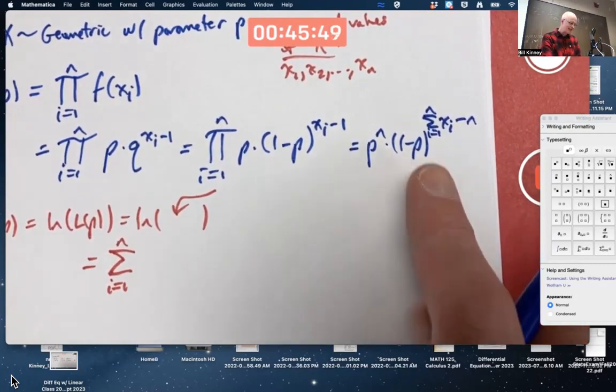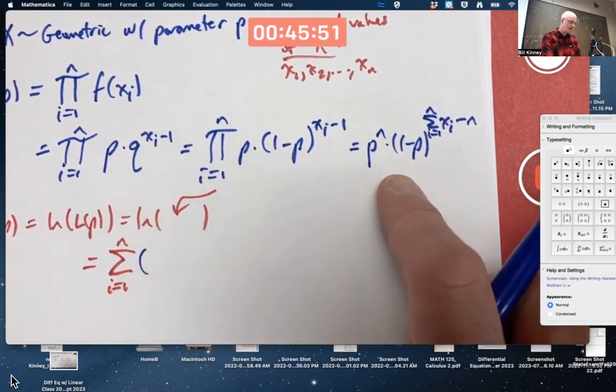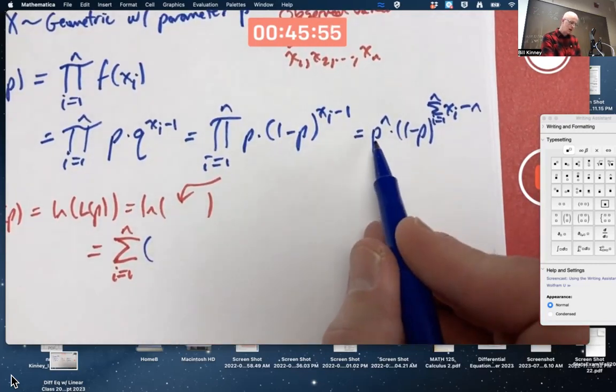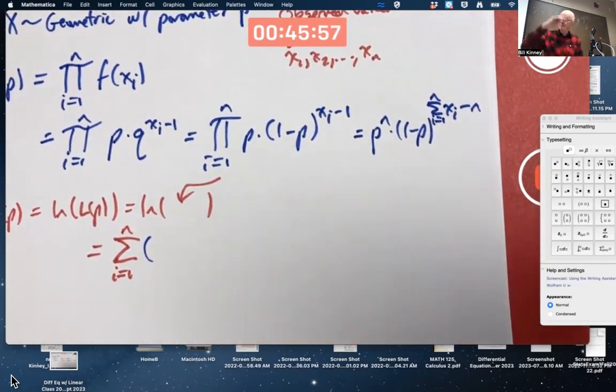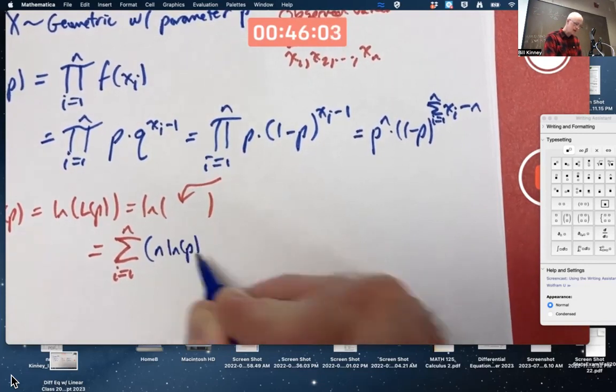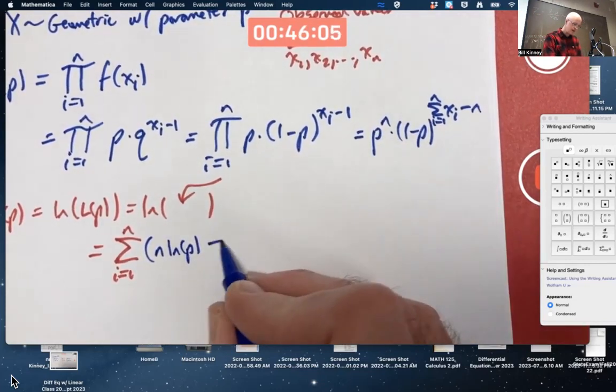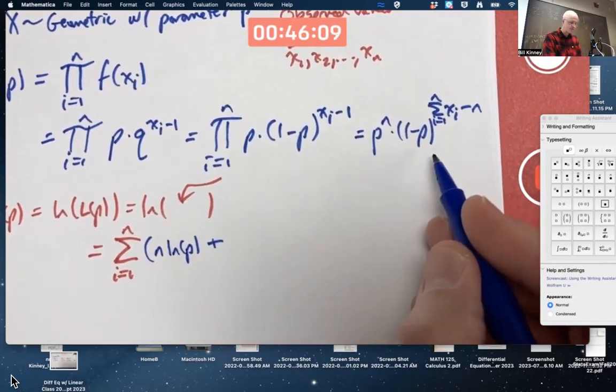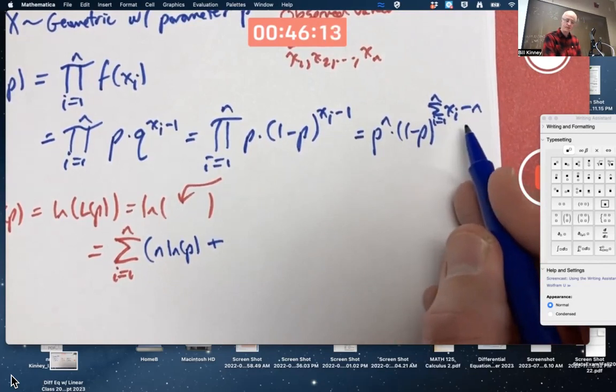So yeah, we're taking the log of that. Log of a product, we can convert that to sum of logs. Log of P to the N, the N can be brought out in front. Another property of logarithms. There's a product there that gets converted to a sum. Take the log of these things, or this thing, I should say. That crazy exponent comes down in front.